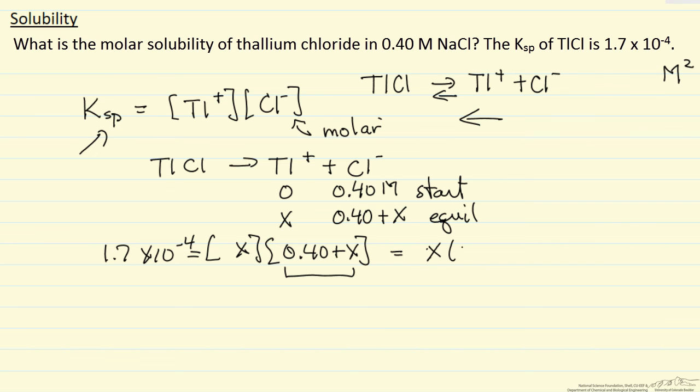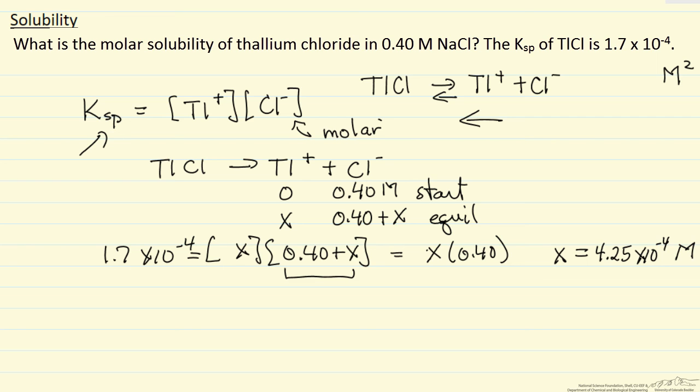So we are going to write this as x times 0.4, which means now I can solve this for x. 4.25 times 10 to the minus 4 molar, so indeed this is small compared to 0.4, a tenth of a percent. So it's a good assumption we made to ignore the x here in the addition.